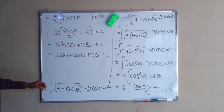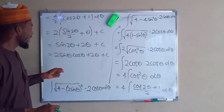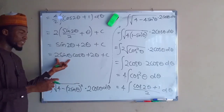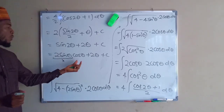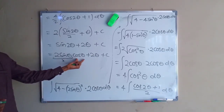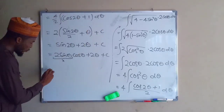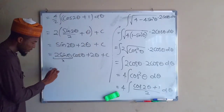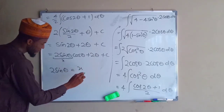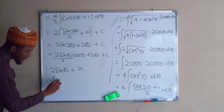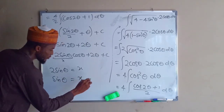Initially we let x equal to 2 sin theta, so we can replace 2 sin theta with x. But we don't know what cos theta is, so we need to find it. Since 2 sin theta equals x, dividing both sides by 2 gives sin theta equals x divided by 2.